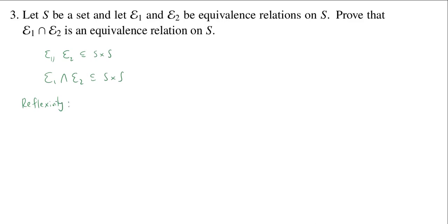For reflexivity, let s be some element of S. We need to show that (s,s) is in the intersection equivalence relation. Well, because E1 and E2 are both equivalence relations, they both are reflexive. So that implies (s,s) is in E1, and it's also in E2. But if it's in both sets, then it's in their intersection.